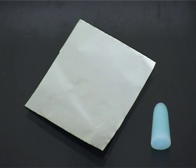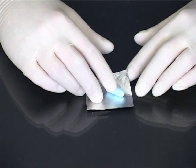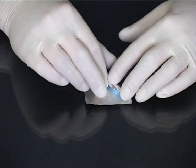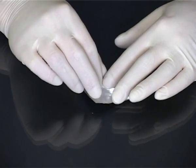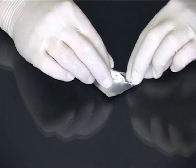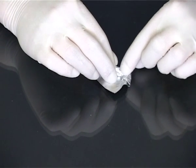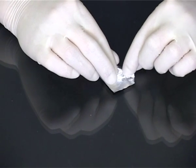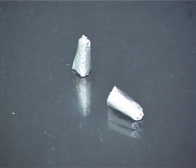Once removed from the mould, the suppositories need to be wrapped individually. Aluminium foil is usually used. The suppository is wrapped in a suitably sized piece of foil. This produces neatly wrapped suppositories.